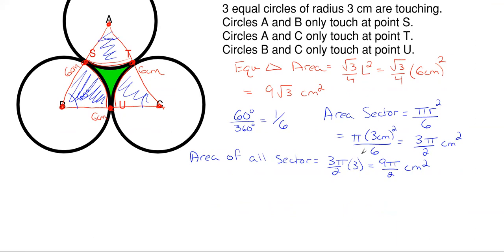So if we subtract this area of each of all the sectors combined, subtracting from the equilateral triangle area, we will get the area in green, which is just the remainder. So the area in green will be equal to my equilateral triangle area of 9 square roots of 3, subtracting off the area of all my sectors, which is 9 pi over 2.